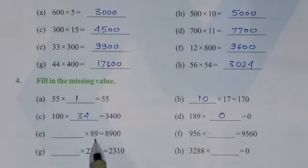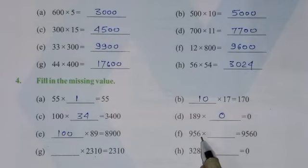Next number, here is given 89, and this side 8900, it means we have to write 100. Here is 956, here 9560, one 0 extra, so we have to multiply by 10. Here, the same numbers are given, it means we have to multiply this number by 1. Here, to get 0, this number should be multiplied by 0.